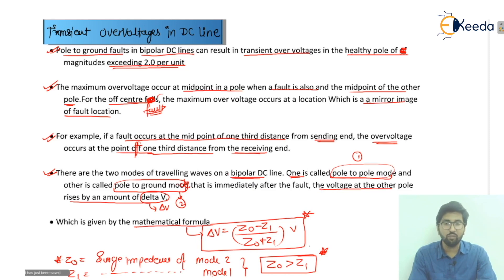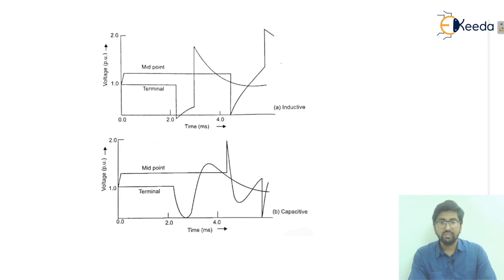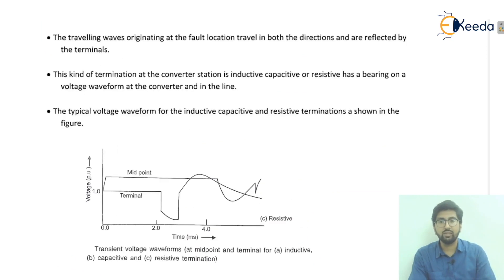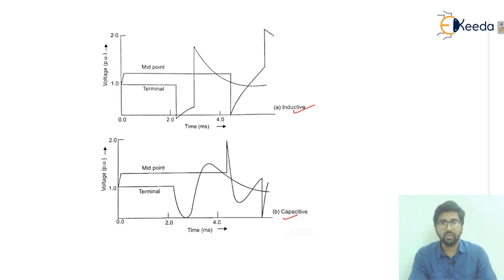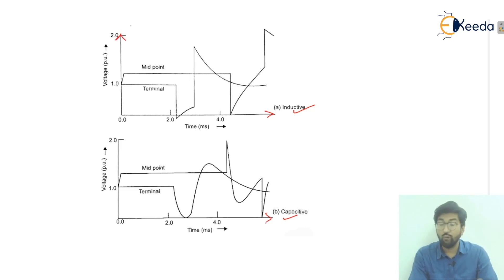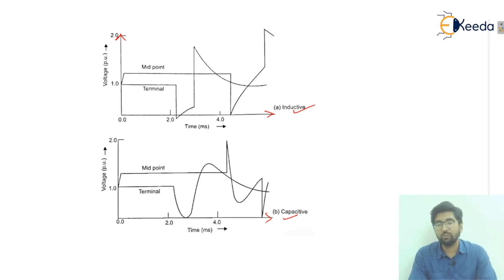We will now discuss some waveforms for the inductive, capacitive, and resistive termination cases. These are transient voltage waveforms at the midpoint and terminal. The x-axis represents time and the y-axis represents voltage in per unit. For all three cases the waveforms are defined, and at the midpoint the overvoltage exceeds 1.0 per unit.